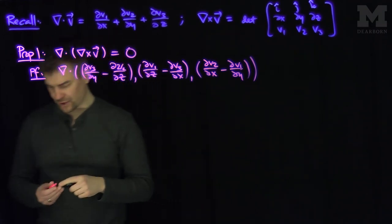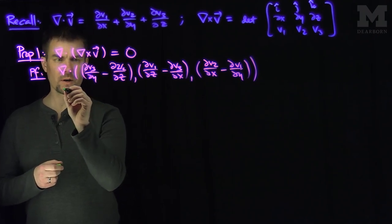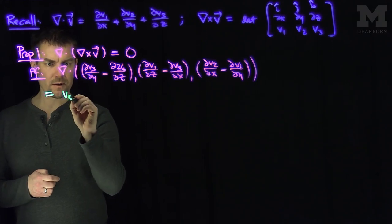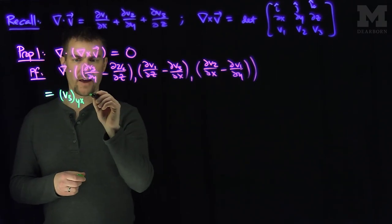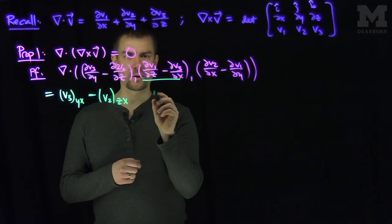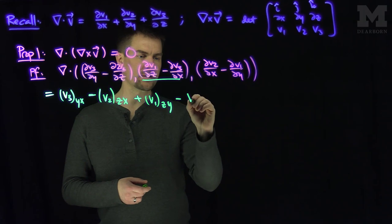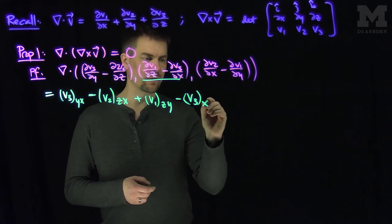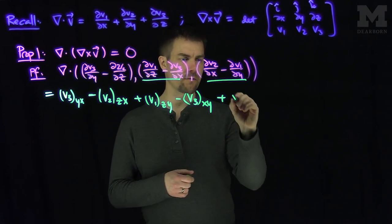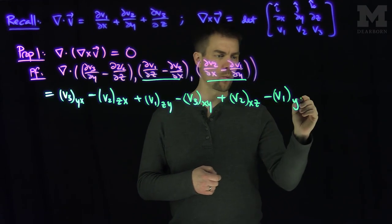Now we're going to do the divergence of this thing, so we take the x derivative of the first entry, the y derivative of the second entry, and the z derivative of the third entry. That gives us: v3 with a y and x derivative, minus v2 with a z and x derivative, plus v1 with a z and y derivative, minus v3 with an x and y derivative, plus v2 with an x and z derivative, minus v1 with a y and z derivative.